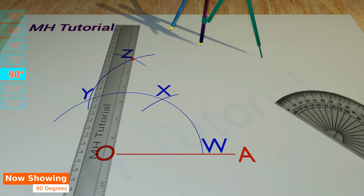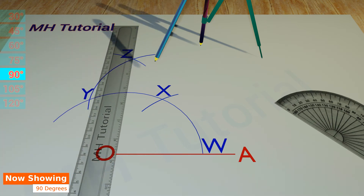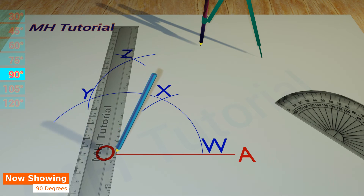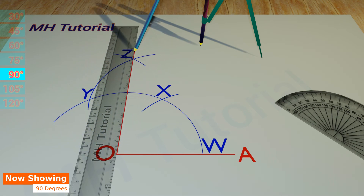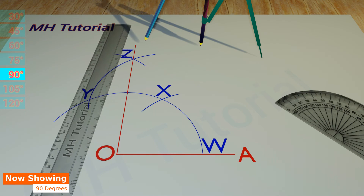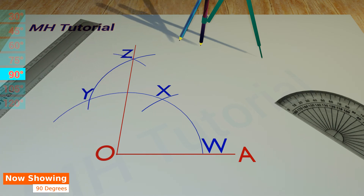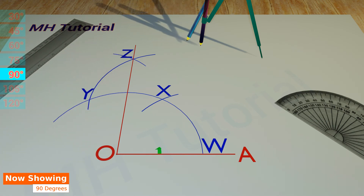Then with the help of a scale, a line segment is drawn from point O to point Z. This line segment may be named OB, so the angle AOB is a 90 degrees angle.